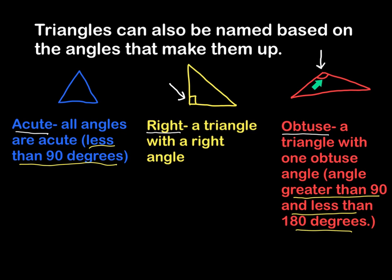If you're wondering, it is impossible to have an obtuse triangle with two obtuse angles. We'll get to that in another lesson, but just take my word for it. So again, quick recap.